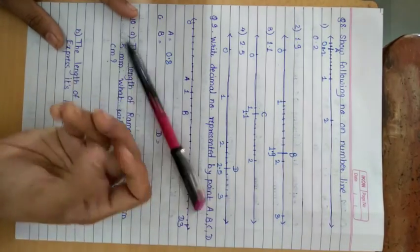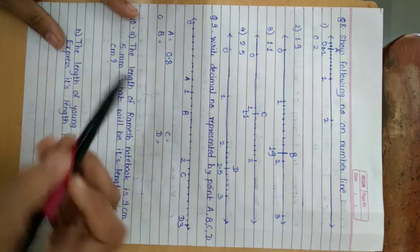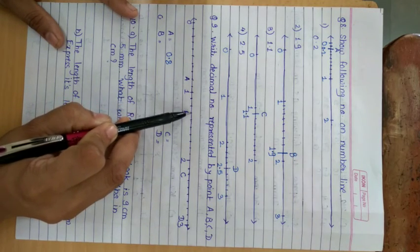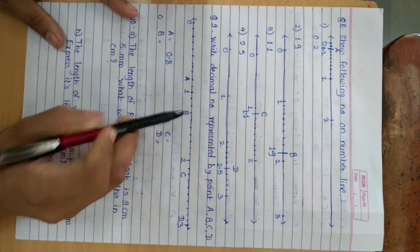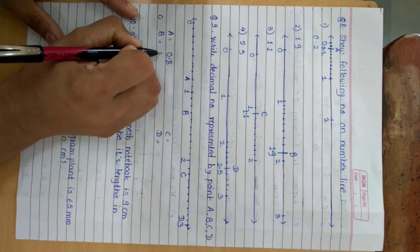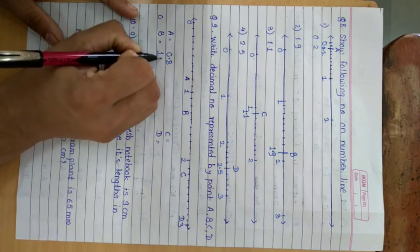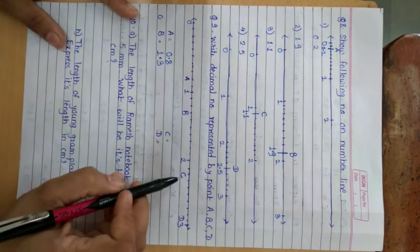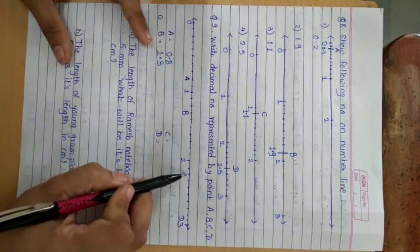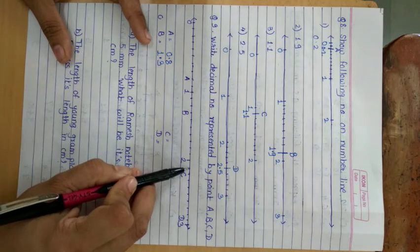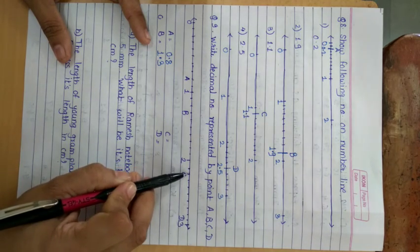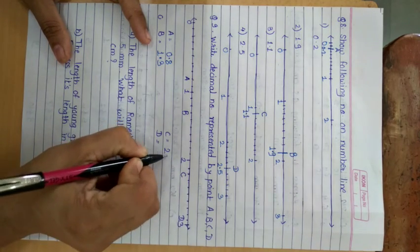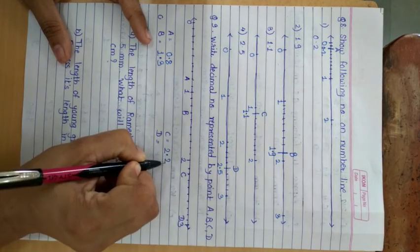Point D — after 1: 1.1, 1.2, 1.3. So I will write 1.3. Point C — after 2: 2.1, 2.2. So I will write 2.2.